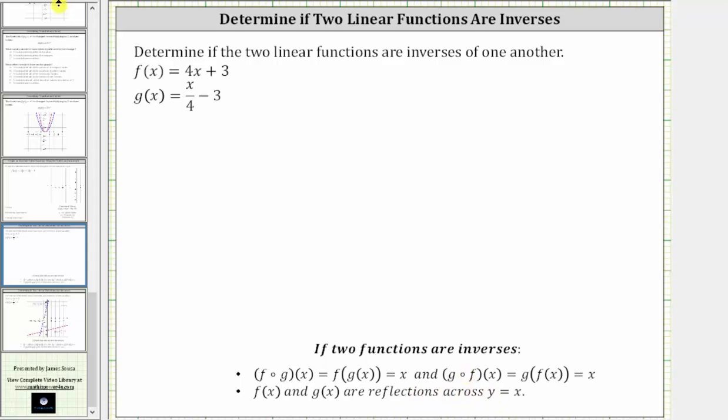So to check to see if these are inverses, let's first determine the composition f of g of x. We will first substitute x divided by four minus three for g of x, which gives us f of the quantity x divided by four minus three.